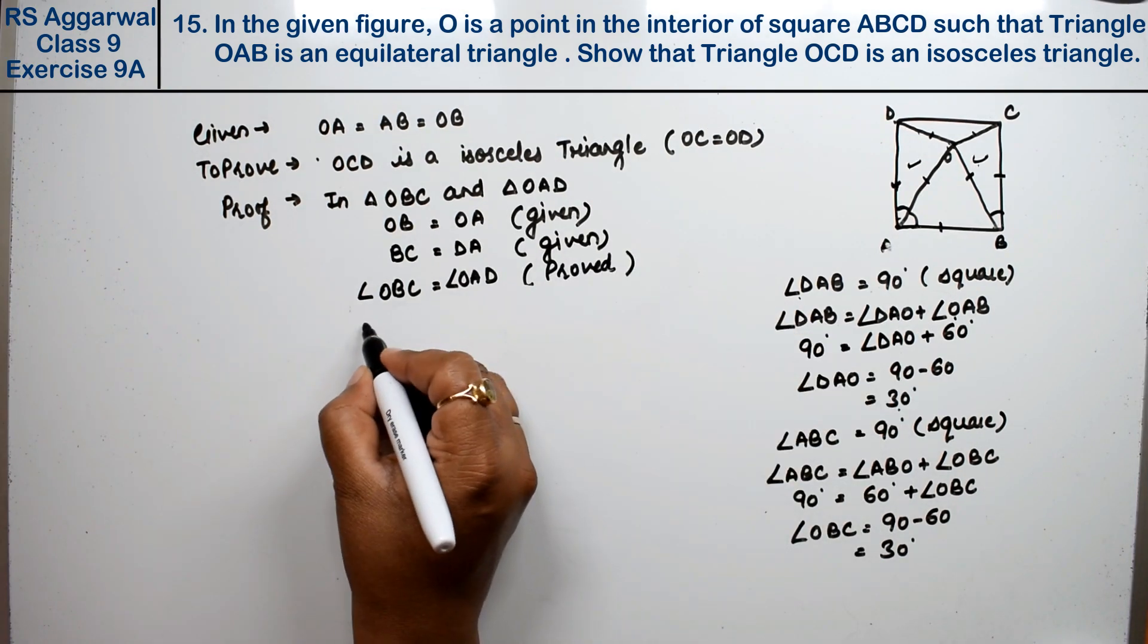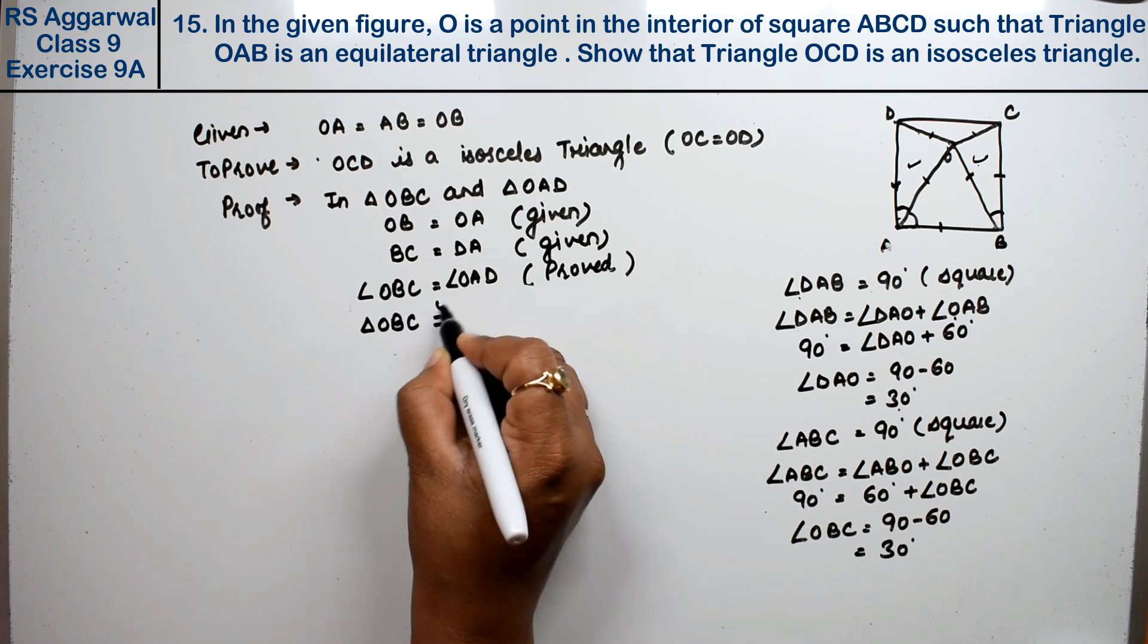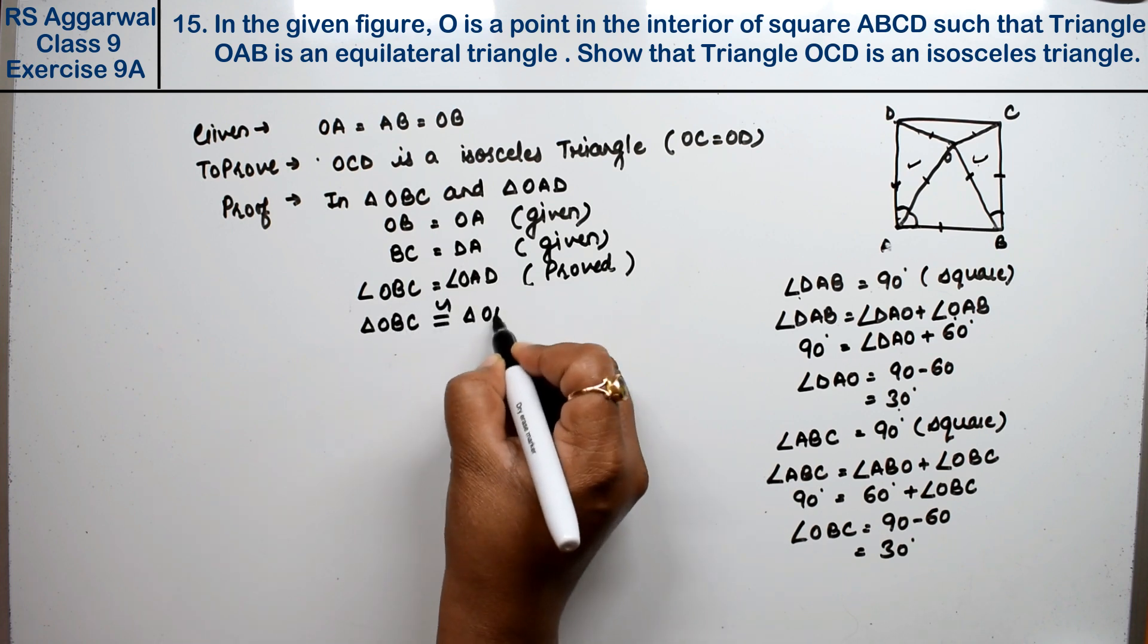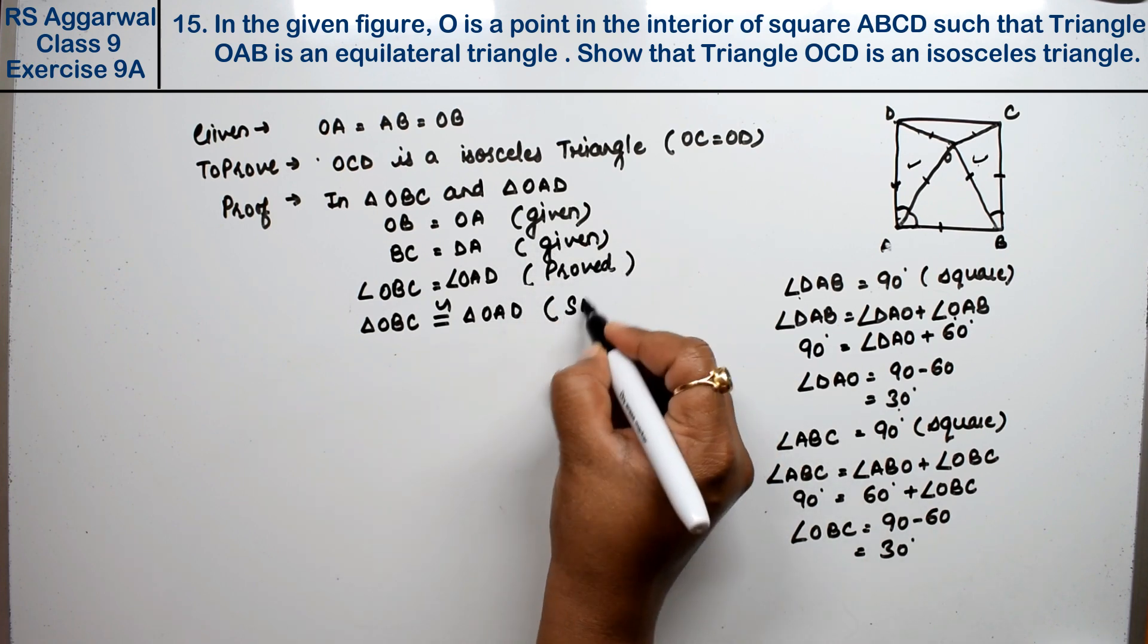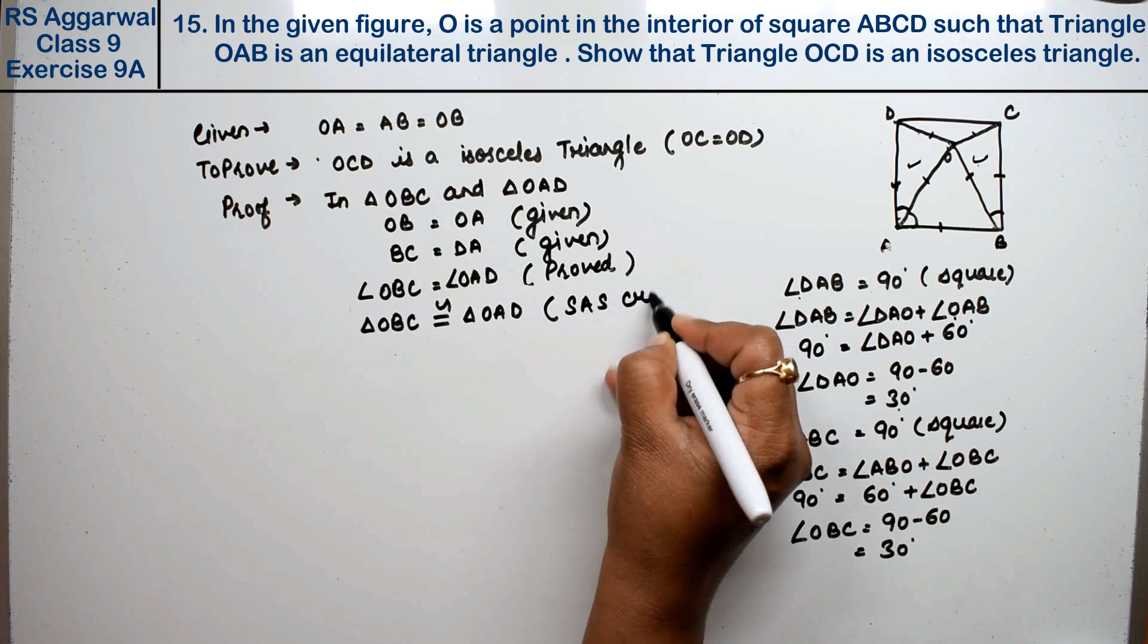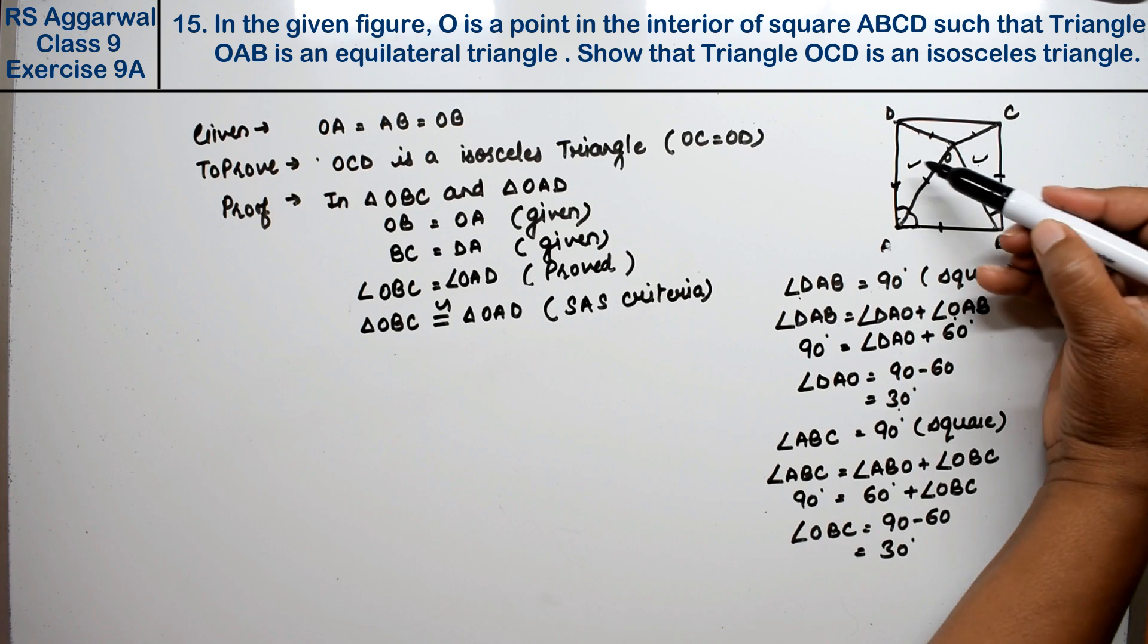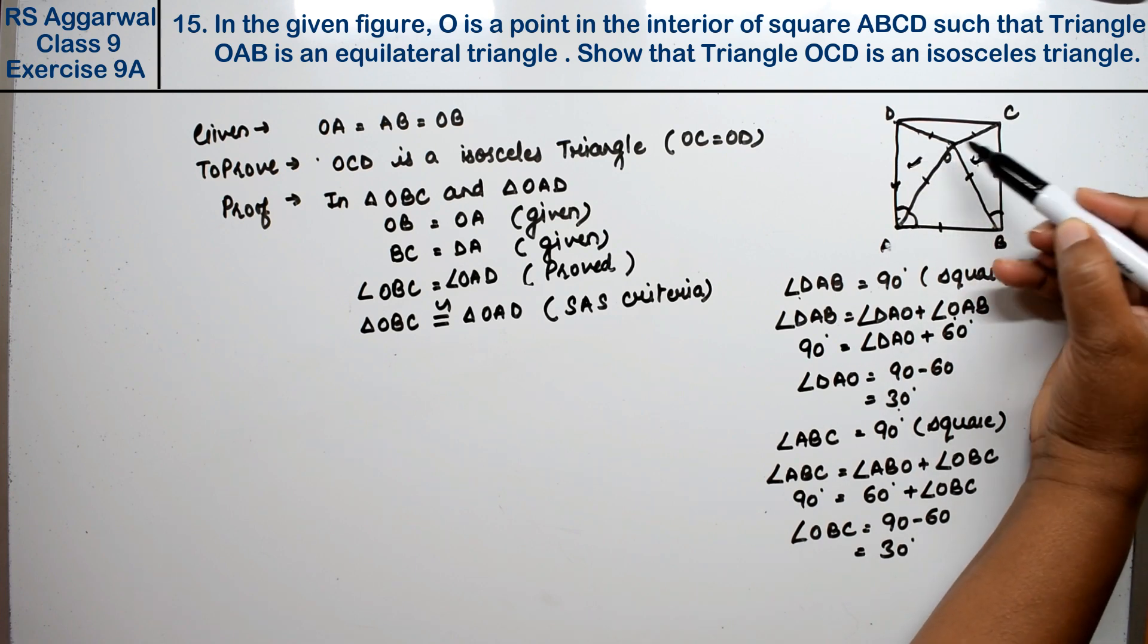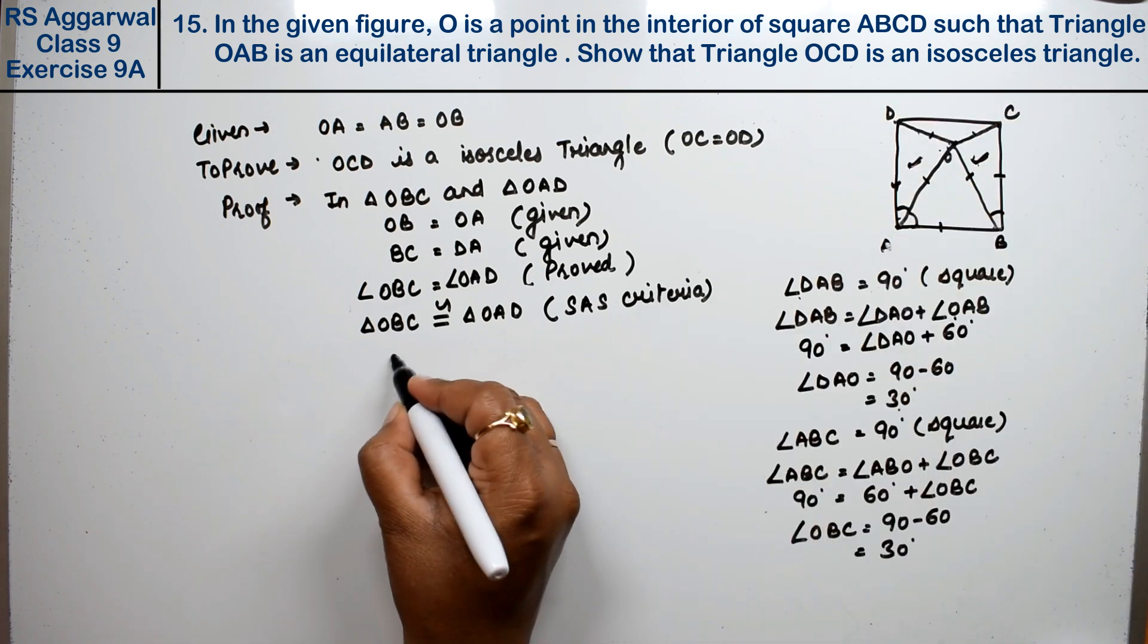When this is proved, triangle OBC is congruent to triangle OAD. By which rule? Two sides and one angle, so this is the SAS criterion.